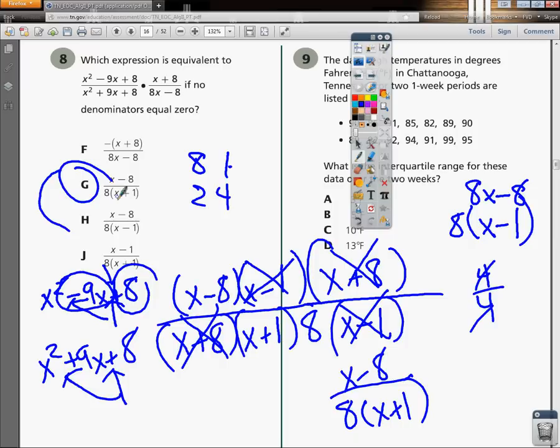So when you have this type of problem, factor out your numerator and denominator. Try to make little sets for yourself that you can cancel out. Look at what's left and you can get your final answer, which in this case is, of course, g.